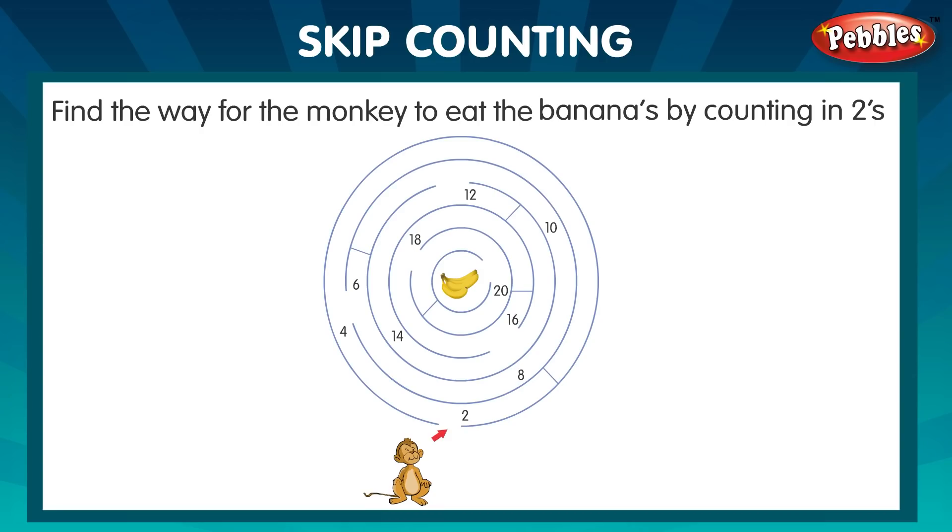Skip counting. Find the way for the monkey to eat the bananas by counting in twos. Two, four, six, eight, ten, twelve, fourteen, sixteen, eighteen, twenty.